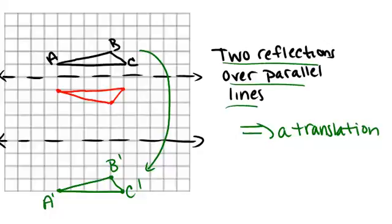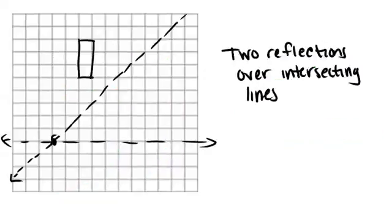The last thing we're going to think about is what if we did two reflections over intersecting lines, as opposed to parallel lines. Here we're starting out with a rectangle, and we're going to reflect it across two lines in order. First, we'll reflect across the diagonal line.